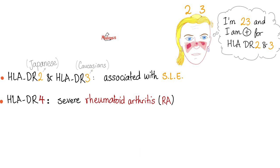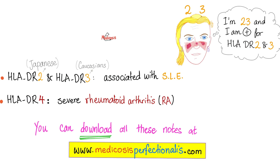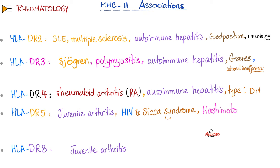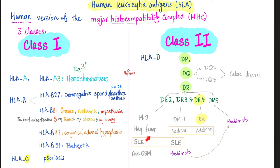Since HLA is a complex made of proteins, and proteins are coded by genes, you will find genetic variation. MHC class 2 associations in rheumatology are numerous. DR2 is associated with lupus, multiple sclerosis, autoimmune hepatitis, Goodpasture syndrome, narcolepsy, and much more. All of this is discussed in the rheumatology playlist.